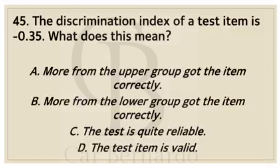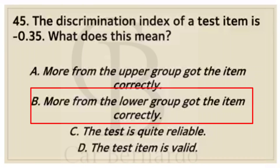Number forty-five: The discrimination index of a test item is negative 0.35. What does this mean? Letter A: More from the upper group got the item correctly. Letter B: More from the lower group got the item correctly. Letter C: The test is quite reliable. Letter D: The test item is valid. Answer: Letter B, More from the lower group got the item correctly.